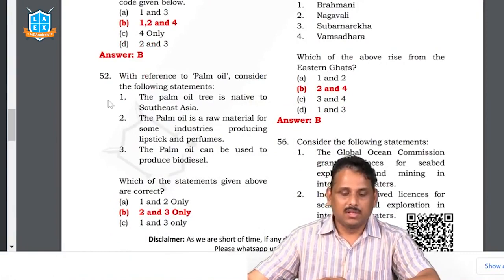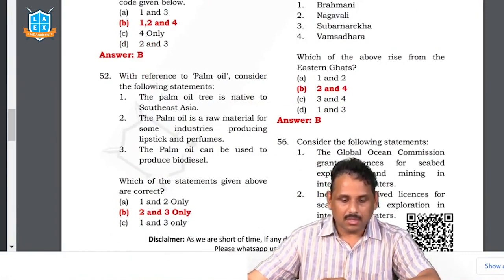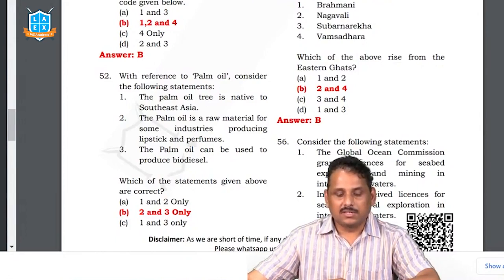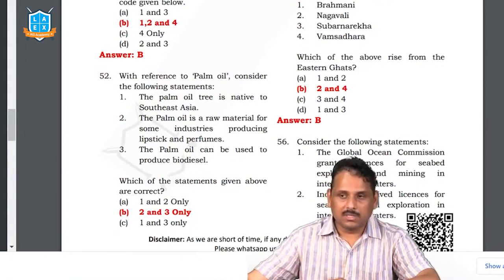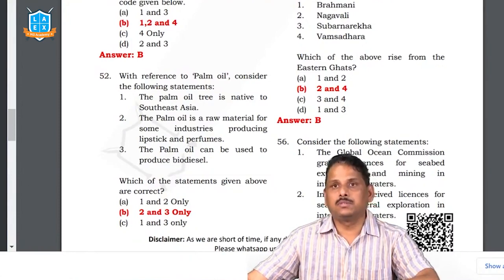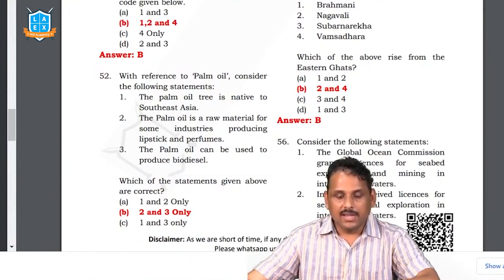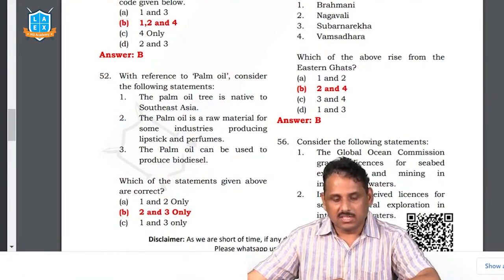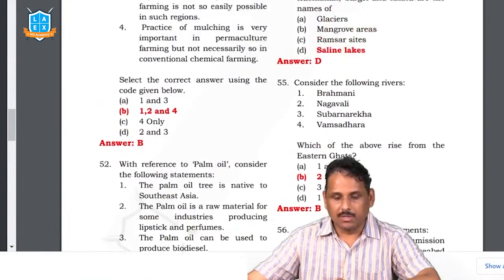Question 52: with reference to palm oil — palm oil comes from Malaysia. From palm oil we also produce lipstick and other perfumes. Biodiesel: palm oil has been diverted for production of biodiesel. Two and three statements are correct. Palm oil is native to Southeast Asia — but today it has been widely cultivated in Brazil, so Amazon forests are being wiped to cultivate it. That is why the statement about it being native to Southeast Asia is wrong. Answer: two and three only.